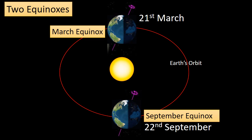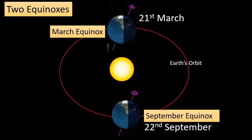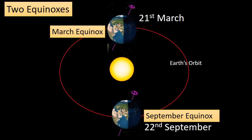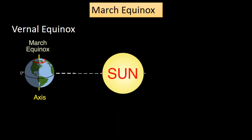There are two equinoxes every year — one around March 21st or 22nd, and another around September 22nd. Let's first understand the March equinox. The March equinox, also known as the vernal equinox, is a moment in time when the tilt of the Earth's axis is not inclined towards or away from the sun.